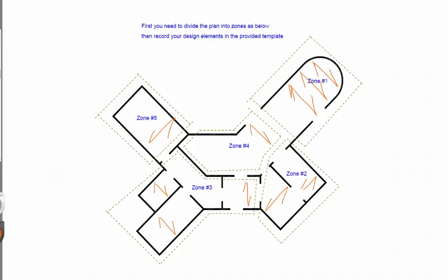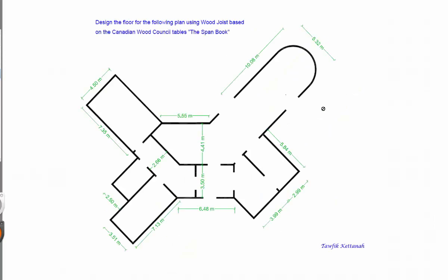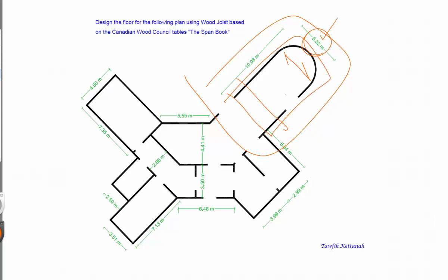Now let's work on zone one. Going back, zone one is here. All you need is to get this value which is 5.32, because your joist will be spanning in this direction, so I need this distance. It doesn't matter whether the measurement is center-to-center or face-to-face — you'll be given one measurement and you will use that for the selection. So we have 5.32 and only one type of joist here.